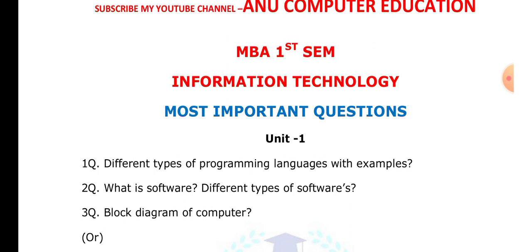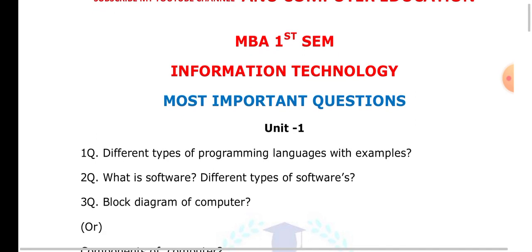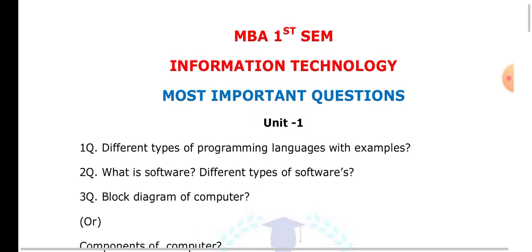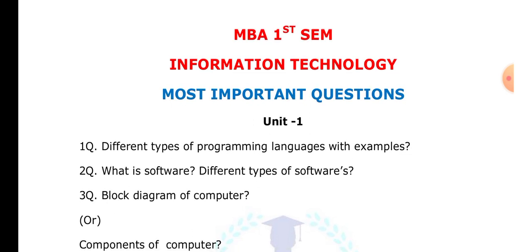In computers, we have a total of three types of software: application software, system software, and utility software. All these software types you have to explain. Next is the block diagram of the computer.